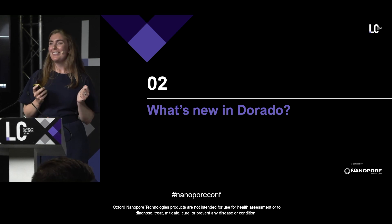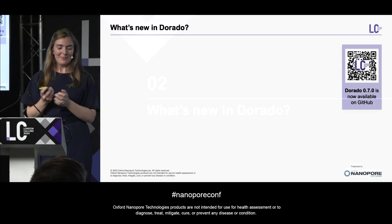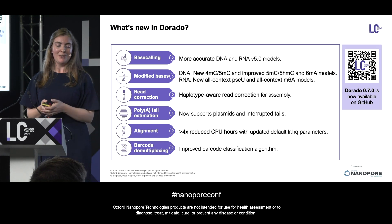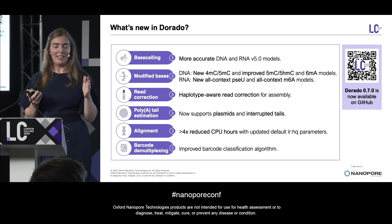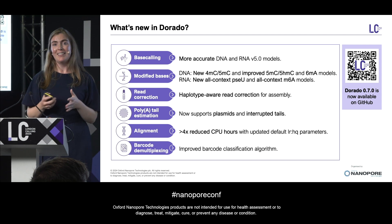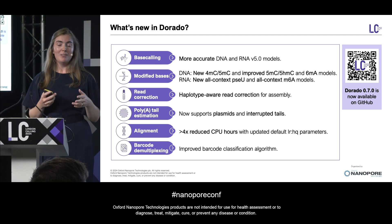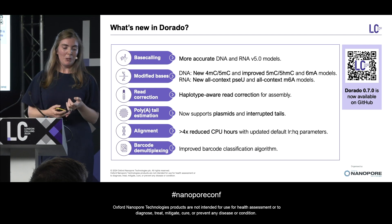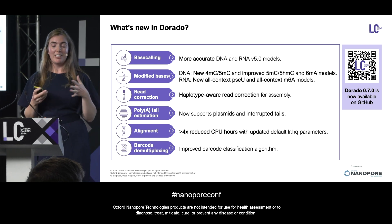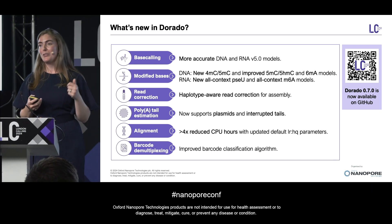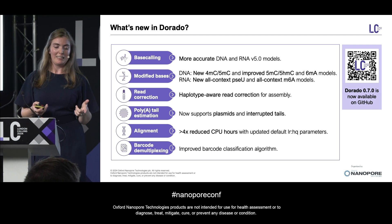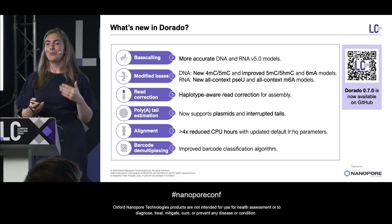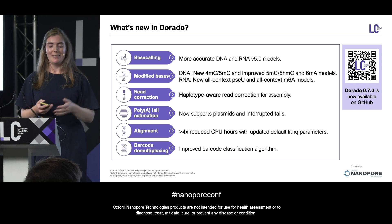So what's new in Dorado? In our brand new release today, Dorado 0.7.0 has just gone out. We have a bunch of exciting updates: new base calling models, modified bases, a new read correction tool, poly-tail estimation extensions, and also improvements to our alignment and barcode demultiplexing. I'm going to talk about all of these in more detail, and the talks following me will go into even more detail.